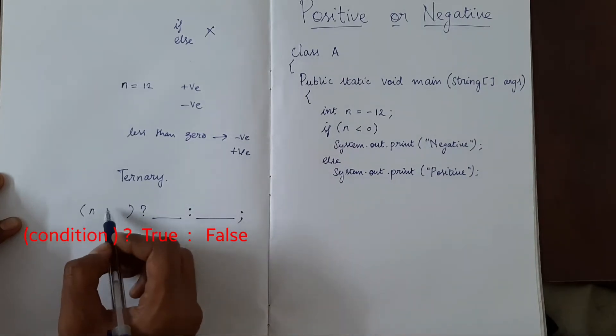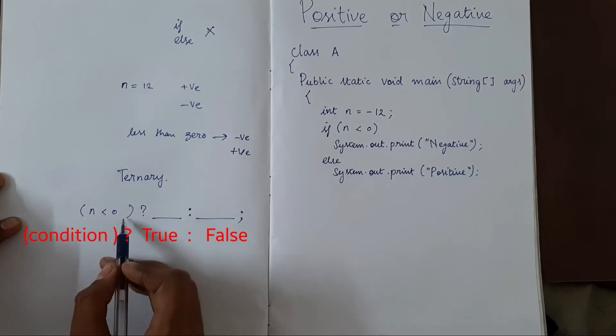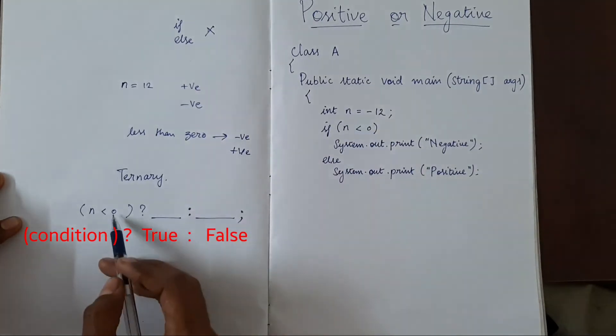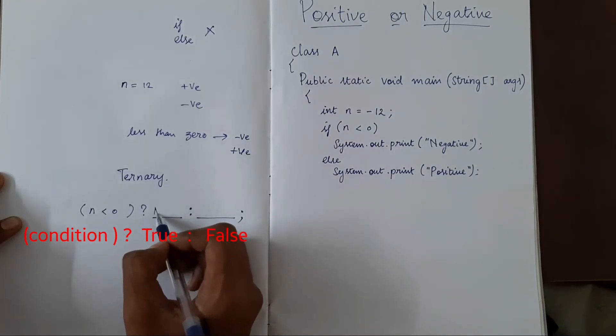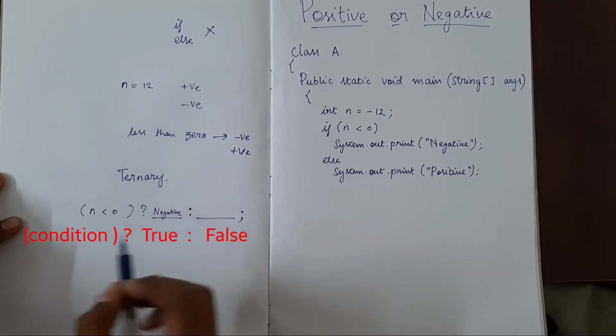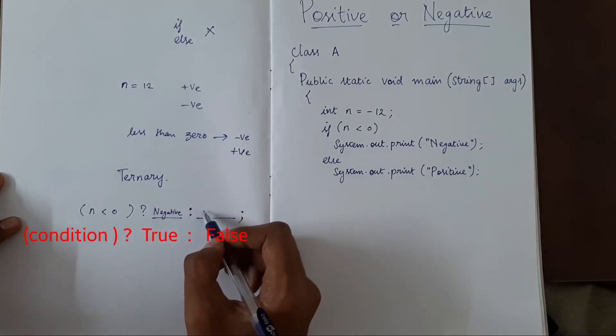Let's say if n is less than 0. If it is true, if a number is less than 0, it means it is negative. If this is false, then the number is positive.